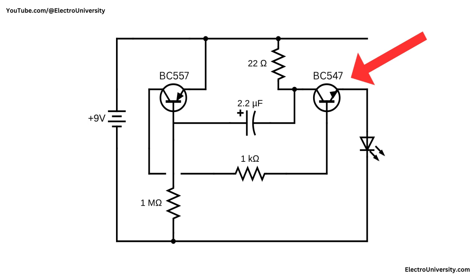When BC547 turns on, it lets current flow through the LED, and the LED lights up. The capacitor quickly discharges through the 22 ohm resistor and the BC557 transistor, which makes the LED turn off.